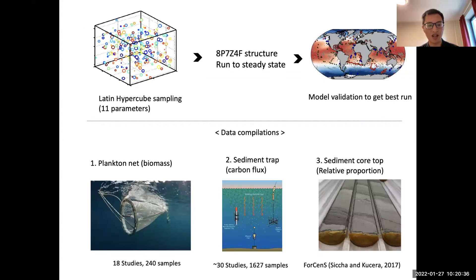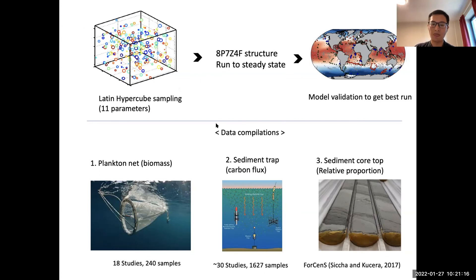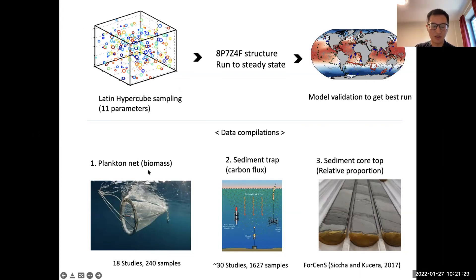We have 11 parameters in total and we use Latin hypercube sampling to generate 1,100 model runs using the same structure: 8P7Z4F, which stands for eight phytoplankton size classes, seven zooplankton size classes, and four foraminifera functional groups. The foraminifera group is fixed at 190 microns. We run the model to steady state and compare with different data compilations to get the best run. The data used includes Plankton*Net for biomass output, sediment traps for carbon flux, and sediment core-top data for relative abundance proportion.